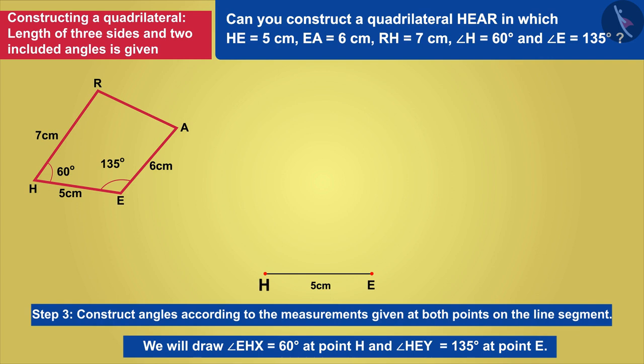First of all, with the help of compass, we will make an angle EHX of 60 degrees measurement at point H and we have to make an angle of 135 degrees at point E.